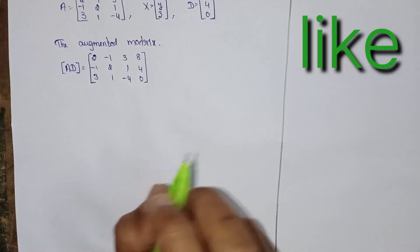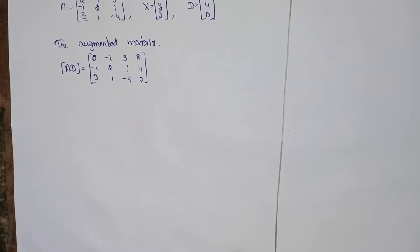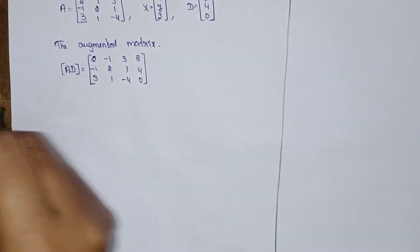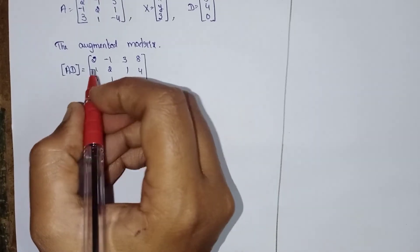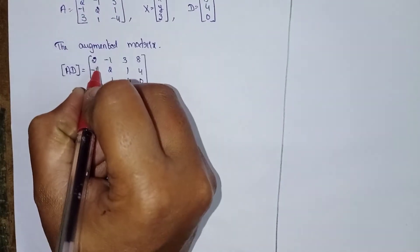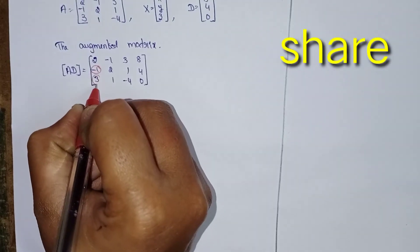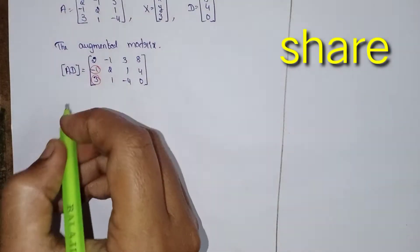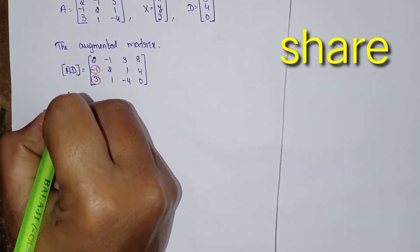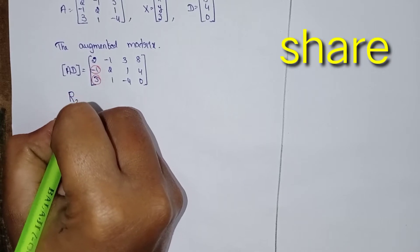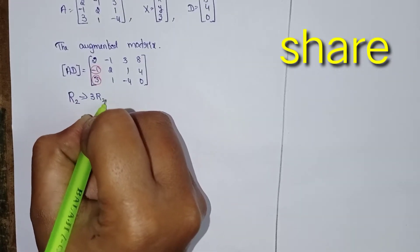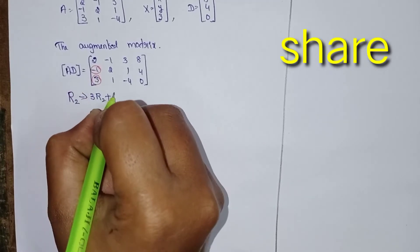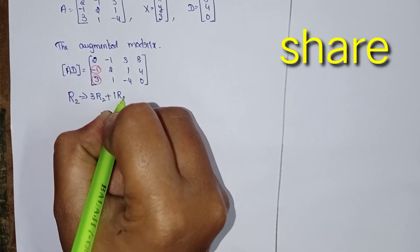Now the augmented matrix. The augmented matrix [A|D] — write the A matrix and D matrix with 8, 4, 0. Now convert these two entries into zeros using row operations in R2.